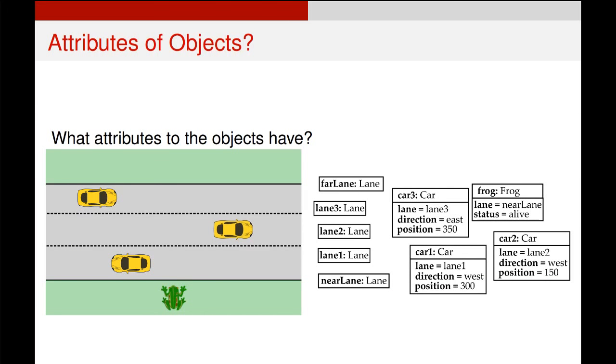And so if we want to draw those attributes out using UML object diagrams, we do them like this. Below our object name and the class that it's attached to, we write down our attributes—lane, position, direction—you can see there for car 3, and then we give the specific value. So car 3 is in lane 3, it's traveling east, and it has a position of 350. And I've done the same thing for all the other car objects and the frog object.